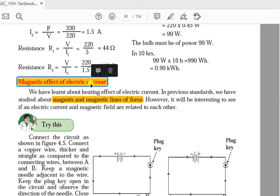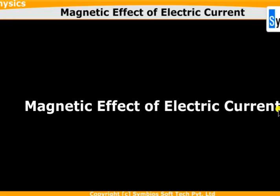Today we are starting the last and important part of this chapter - magnetic effect of electric current. We have learned about the heating effect of electric current, and in previous standard we studied about magnets and magnetic lines of forces. It will be interesting to see if electric current and magnetic field are related to each other.